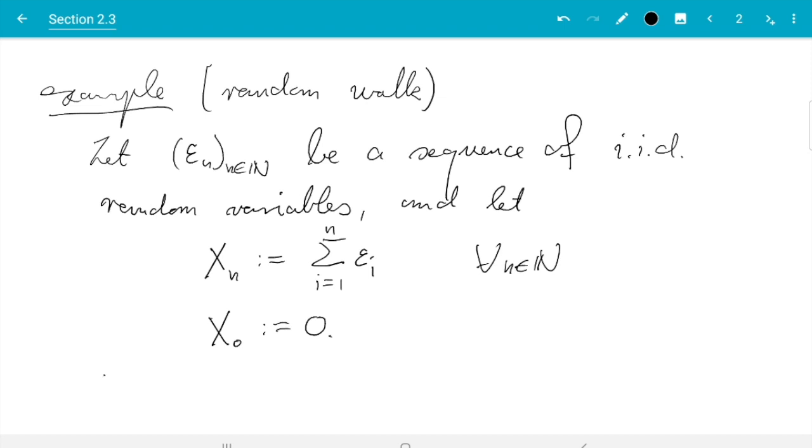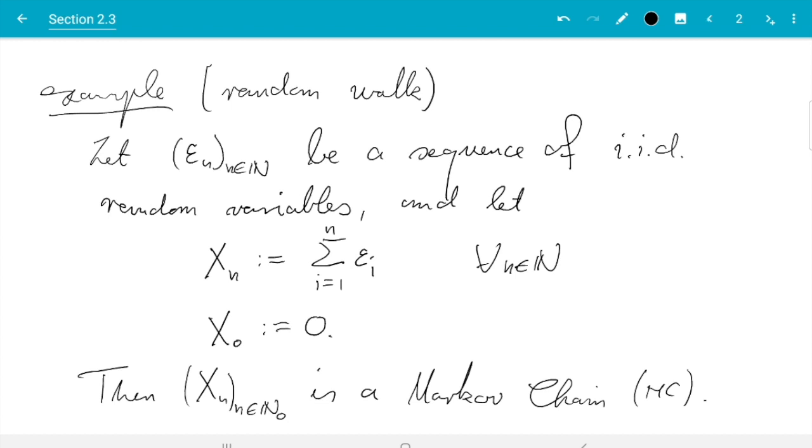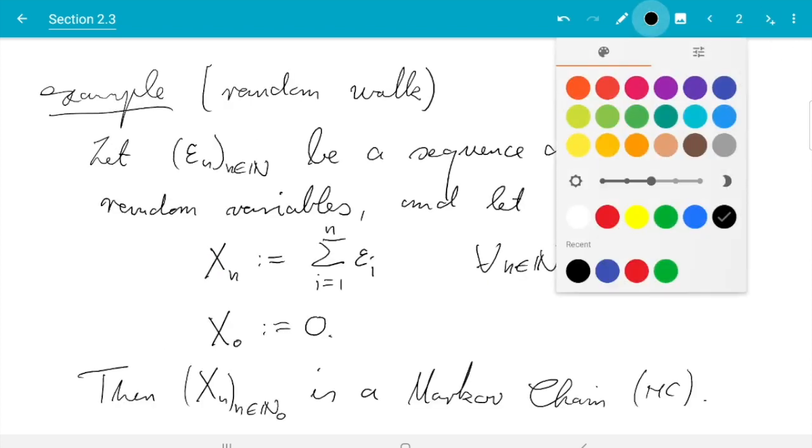One could argue that is a special case of the sum, but then I would need to explain what the sum from 1 to 0 is, which I would say is the empty sum so it would be 0. But let's write it separately just to be sure. This process I claim is a Markov chain, so then (Xn)n∈N0 is a Markov chain.